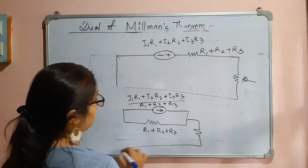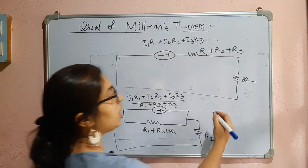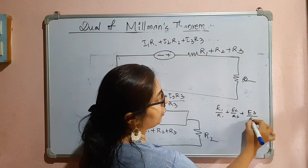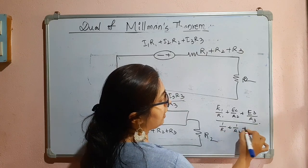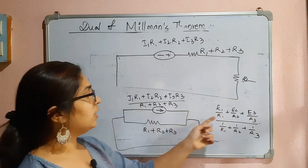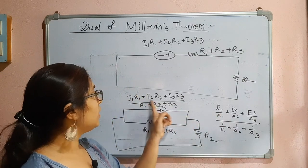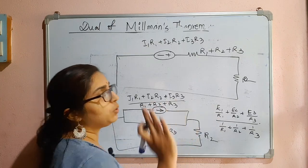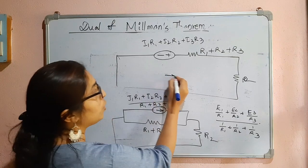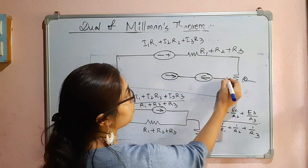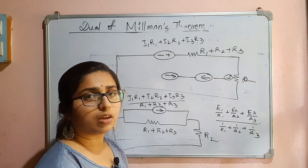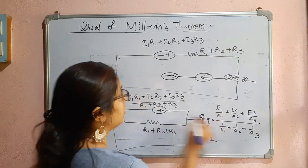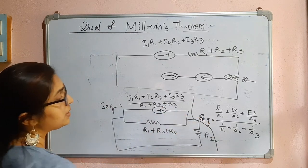Comparing with Millman's theorem where E_equivalent = (E1/R1 + E2/R2 + E3/R3) / (1/R1 + 1/R2 + 1/R3), in the dual we have I_equivalent = (I1×R1 + I2×R2 + I3×R3) / (R1 + R2 + R3), and R_equivalent = R1 + R2 + R3. This is the dual of Millman's theorem — it can be applied to n current sources in series. Different direction cases also apply, just as with Millman's theorem. Remember the expressions for E_equivalent and I_equivalent.